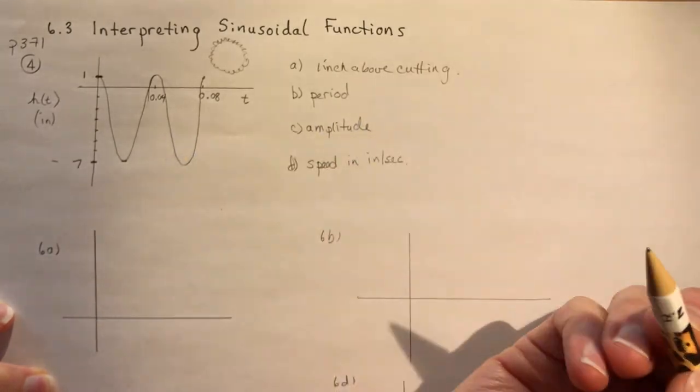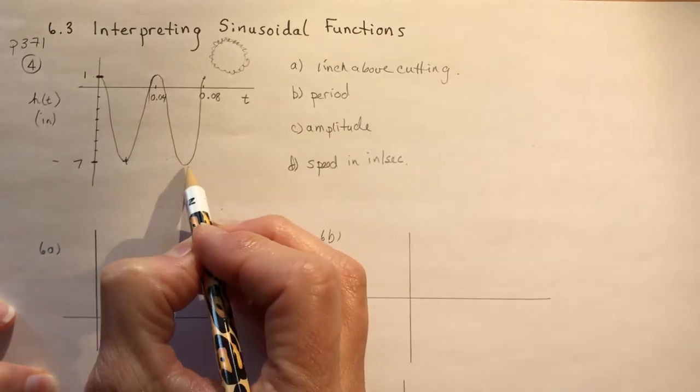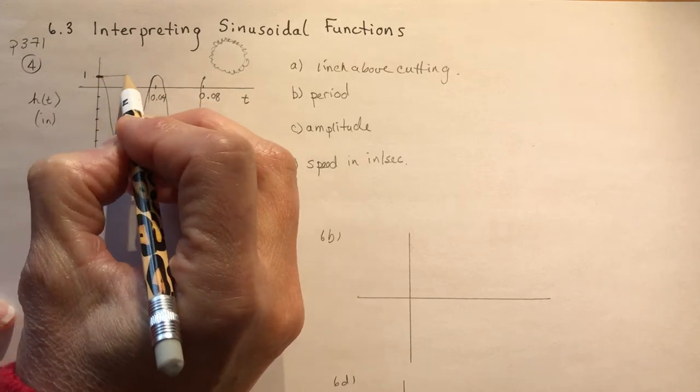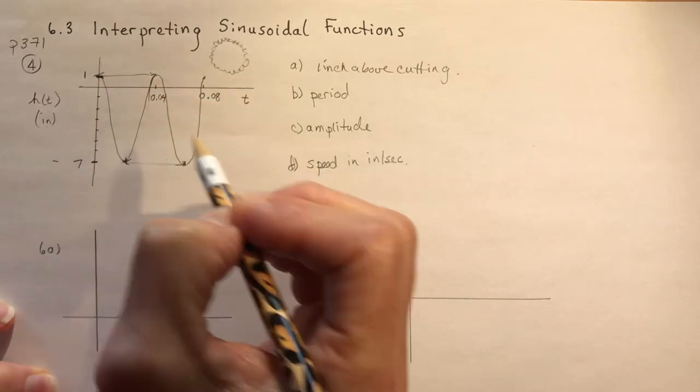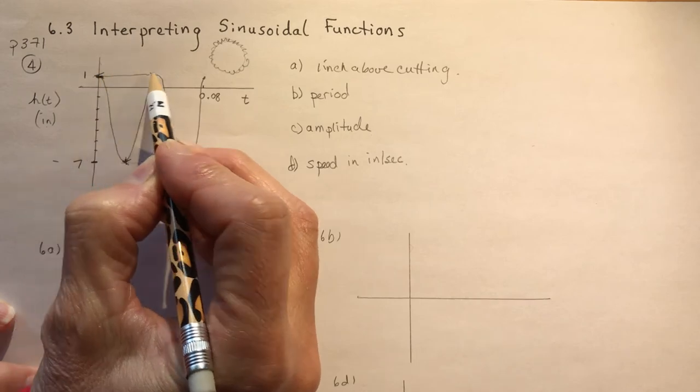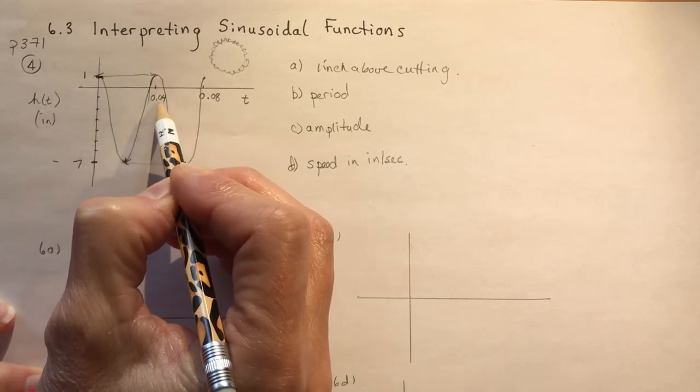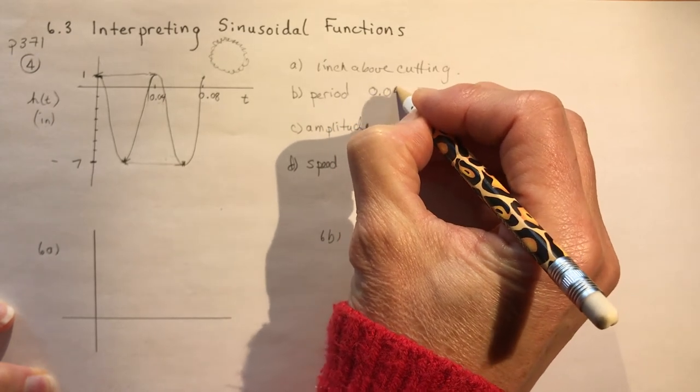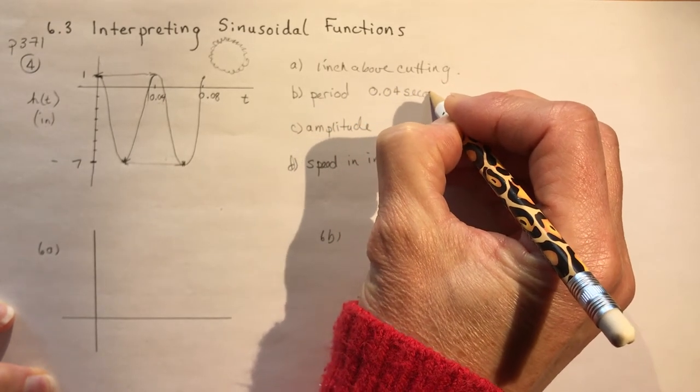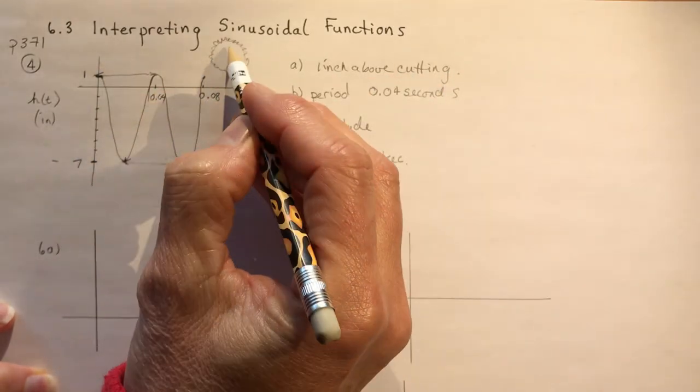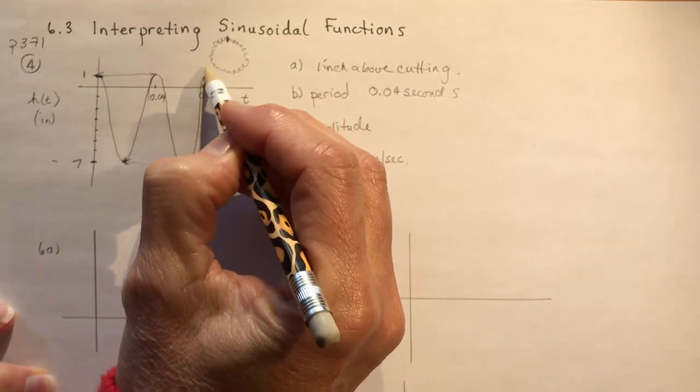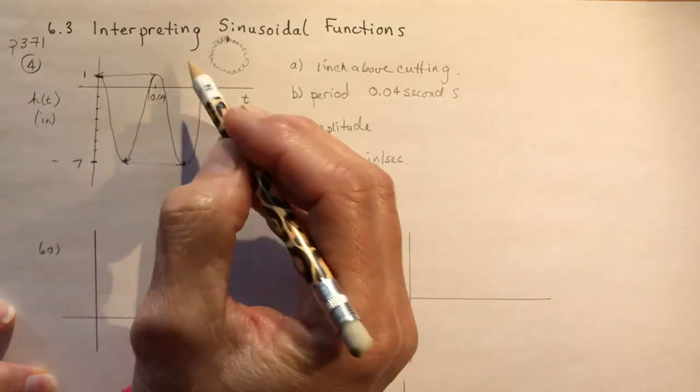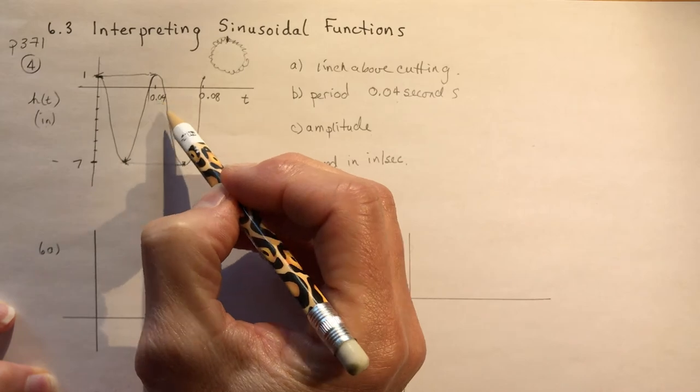So the second question says, what is the period? So remember the period is something that you measure either between two troughs, like from here to here, or it could be between two peaks, which is the easiest way to measure this one because it starts at a peak, goes to another peak, and it was 0.04 seconds. So take 0.04 seconds for the blade to make one complete rotation. So for it to start here and go all the way around would be 0.04 seconds. So it's cutting through and back up. Of course, it's going very, very fast, 0.04 of a second.